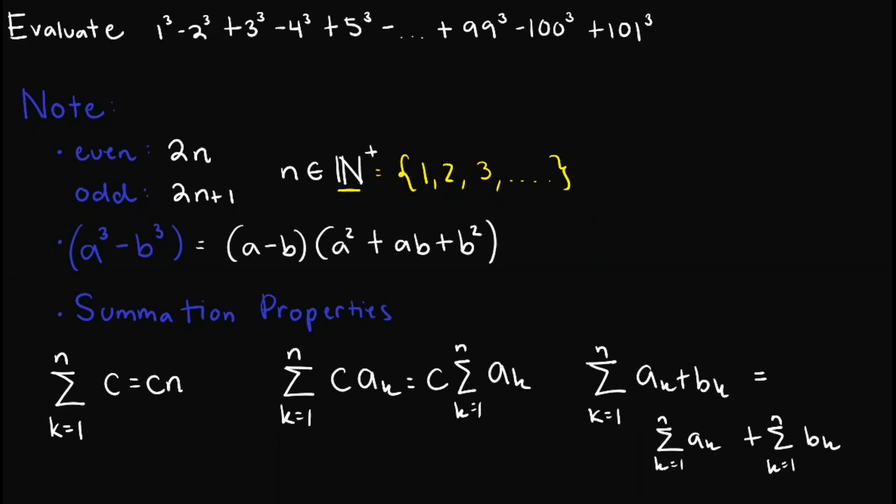The first is that we take note that we can write even and odd as 2n and 2n+1 where n refers to a natural number. Natural numbers, also known as counting numbers, are numbers that range from 1 up to infinity where these are whole numbers except 0.